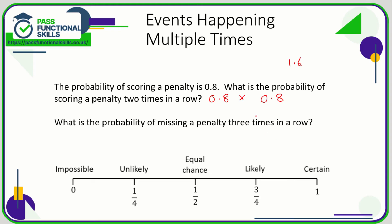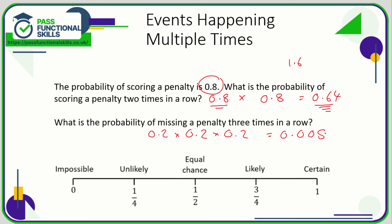For multiple events, we multiply. 0.8 times 0.8 is 0.64, which makes sense — the probability of scoring two penalties should be less than scoring one. What's the probability of missing a penalty three times in a row? Missing is 0.2, so we calculate 0.2 times 0.2 times 0.2, which equals 0.008. Missing one penalty is already unlikely, so missing two in a row is lower still, and three in a row is even lower — which is why this number is substantially small. For multiple events, multiply the probabilities, don't add them.